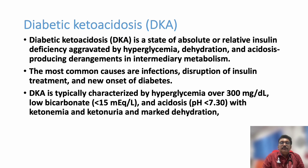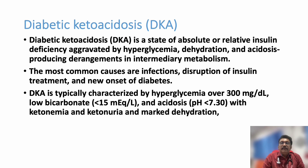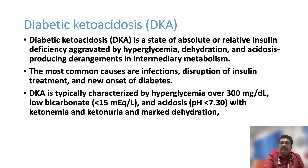DKA is characterized by high blood sugar. Don't think it may only be 500, 600, 700, or 900 — it can be as low as 250 or 350, but mostly it will be more than 300. Bicarbonate will be low because of the acidosis, pH will be less than 7.3, and the patient can have ketonuria. Blood ketones are now available everywhere and are more reliable than urine ketones, though urine ketones can be used where serum ketones are unavailable.